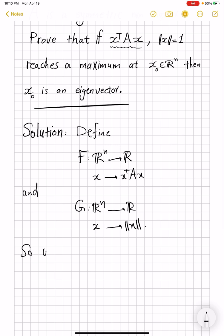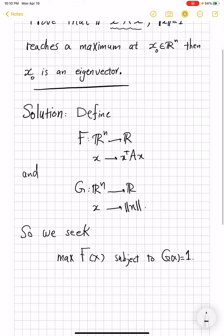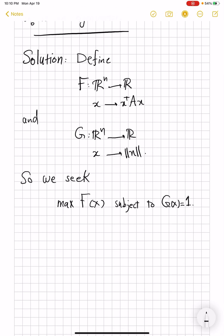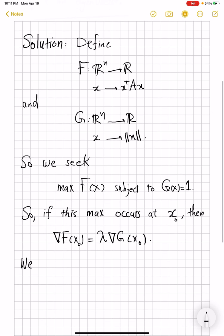So the problem is to find maximum of F(x) subject to G(x) equal 1. And we know from Lagrange multiplier's theorem, if this max occurs at x0, then gradient of F at x0 is some real multiple of gradient G at x0.